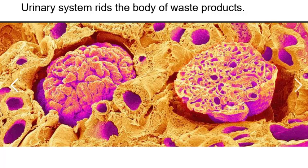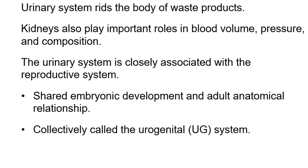Welcome to chapter 23, the urinary system. We're going to learn how you take the toxic substances out of the plasma and turn them into urine that you excrete from your body. The kidneys and the urinary system regulate your blood volume, blood pressure, and determine the makeup of your blood — what's in the plasma, what do you keep, what do you get rid of.